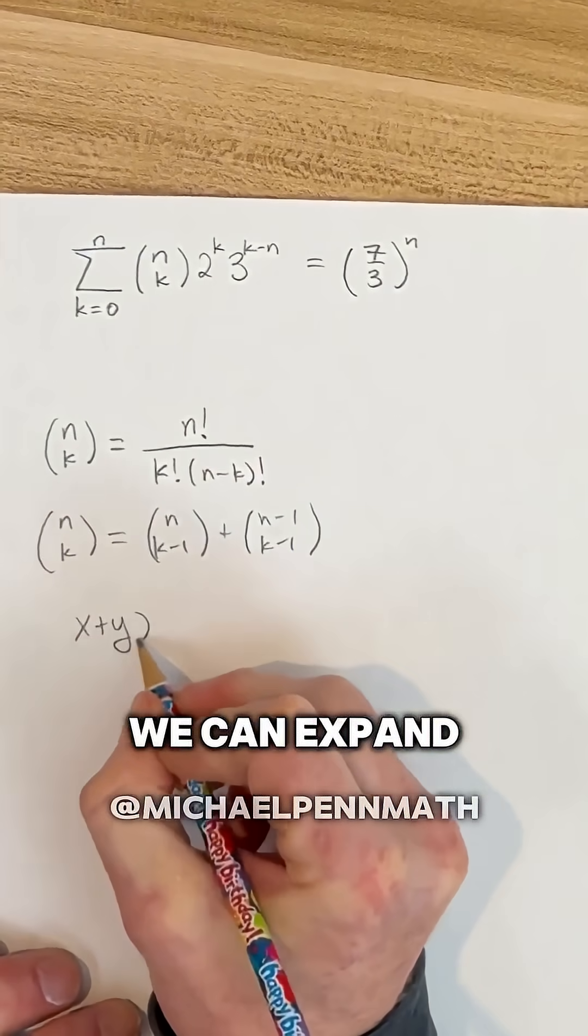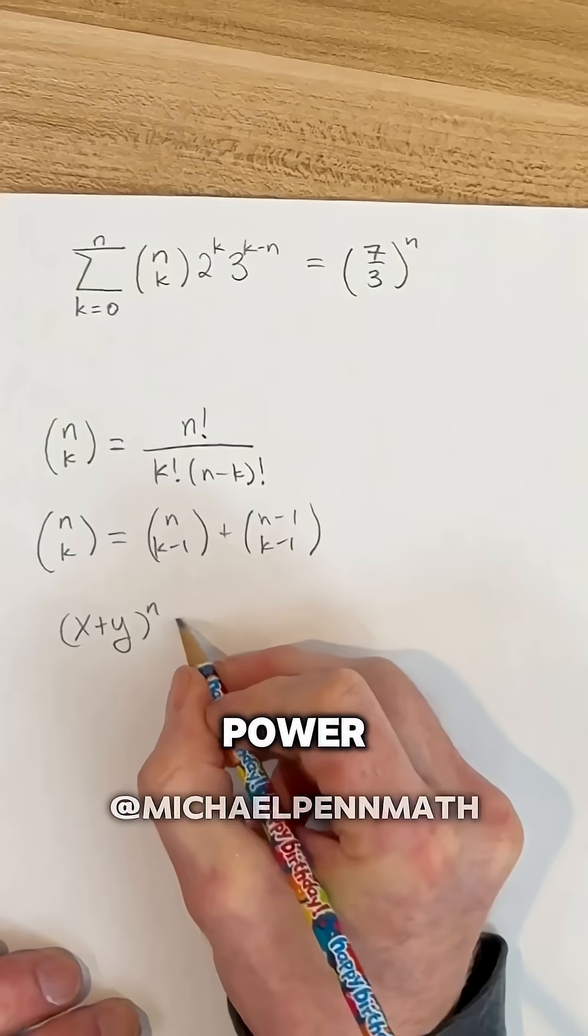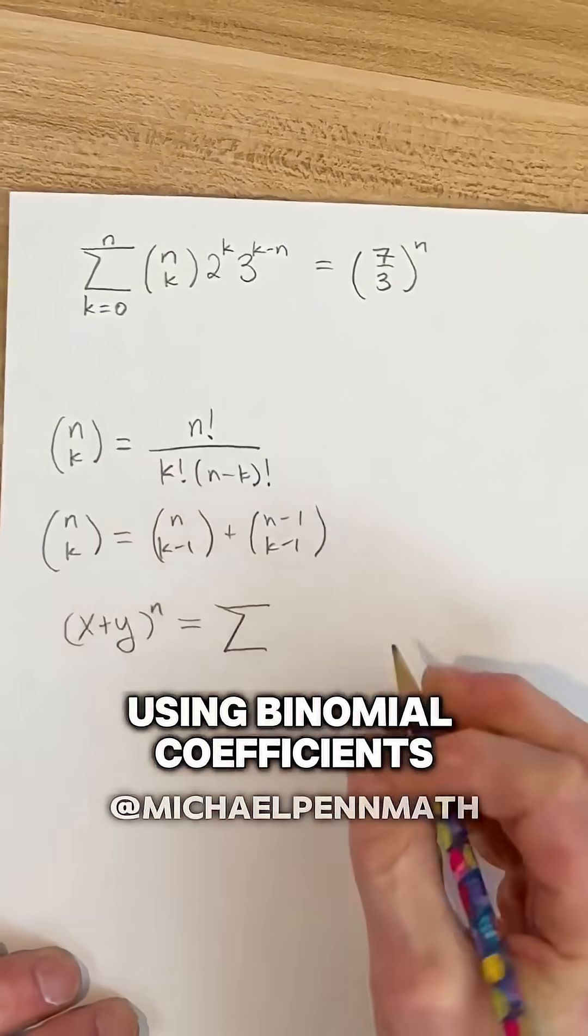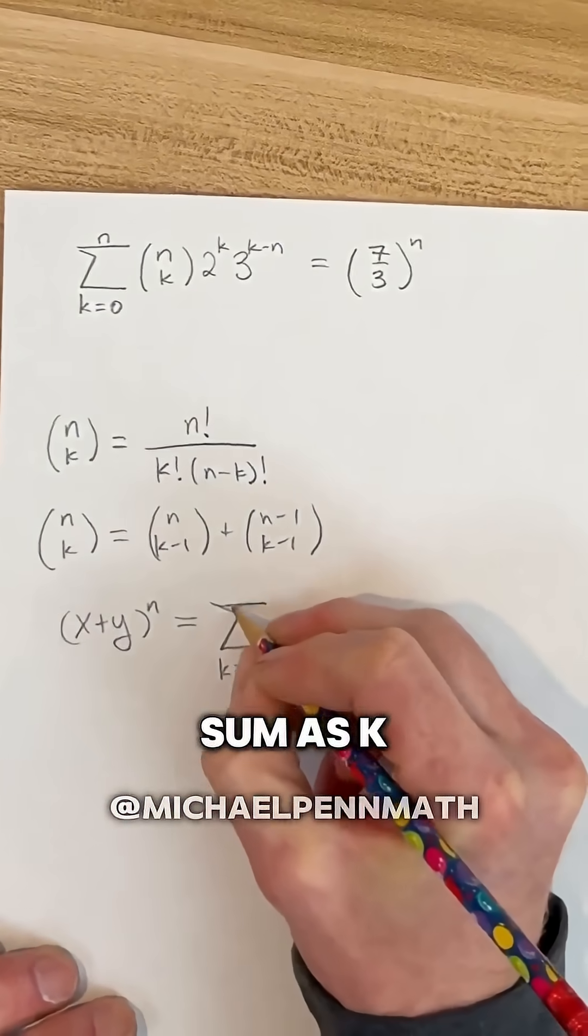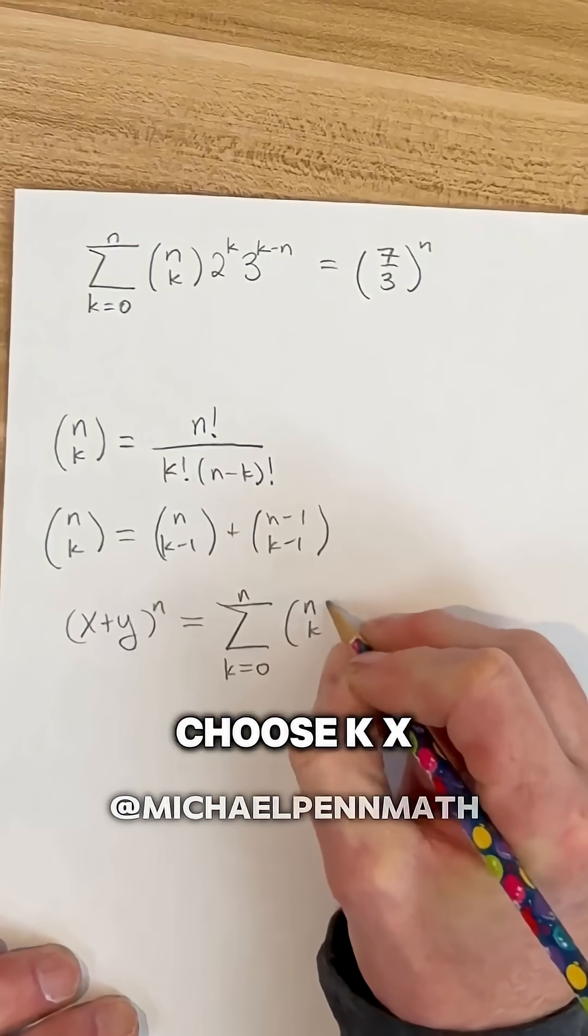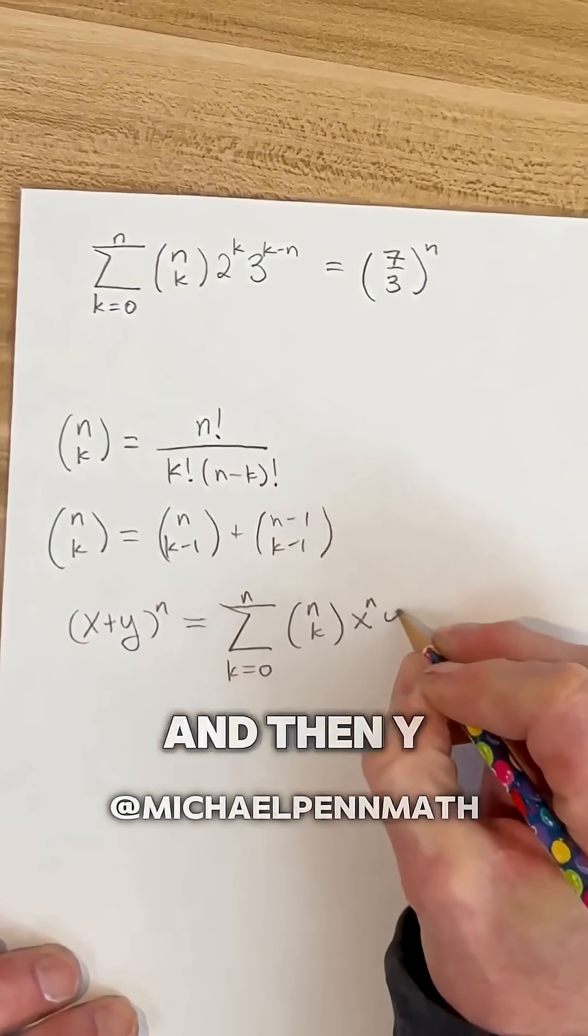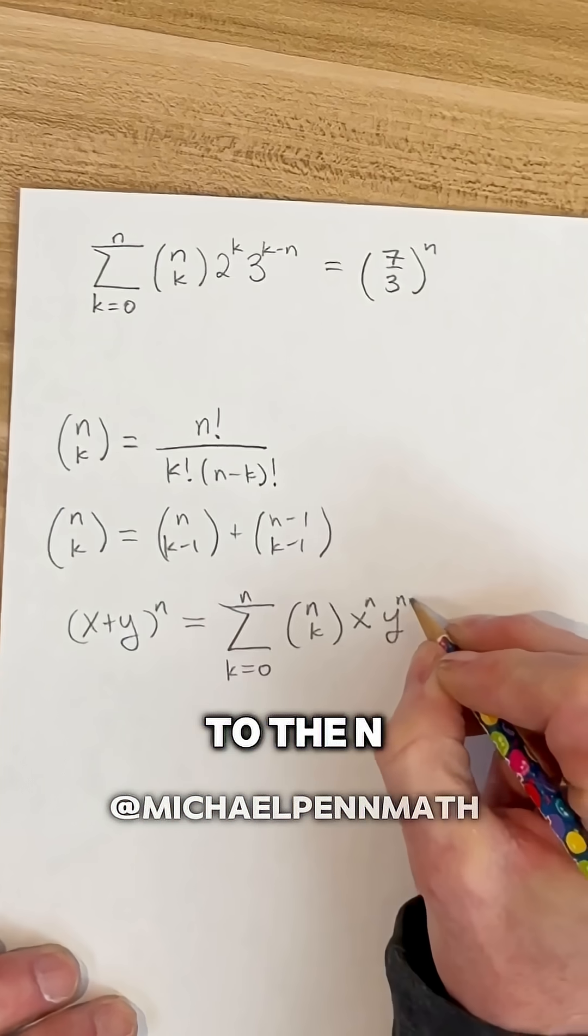We can expand x plus y to the nth power using binomial coefficients. It becomes the sum as k goes from 0 to n of n choose k, x to the n, and then y to the n minus k.